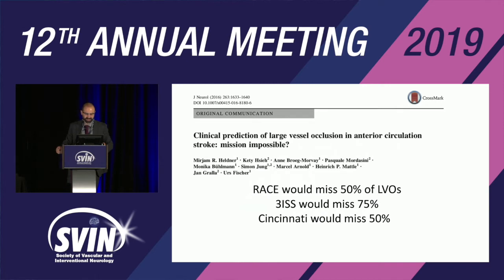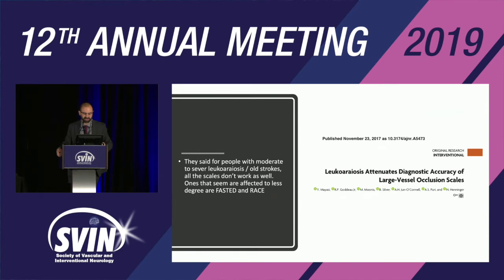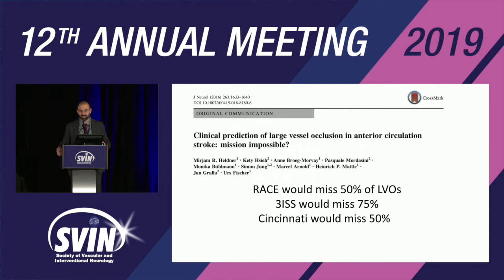A group out of Switzerland showed it's impossible for any scale to be perfect — clinical prediction is mission impossible. RACE would miss 50% of LVOs, the three-item stroke severity scale would miss 70%, Cincinnati would miss 50%. Using about 1,000 patients retrospectively with MRIs and MRAs, they found the best combination is arm weakness for motor plus gaze, vision, aphasia, and neglect for cortical symptoms.